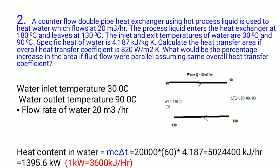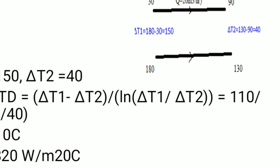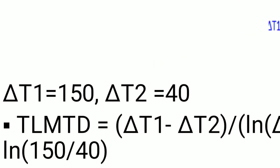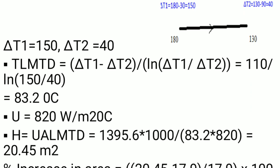The second part asks: if the flow were parallel with the same U, what is the percentage increase in area? Assuming parallel flow, both fluids enter from the same side — water at 30°C and liquid at 180°C. Delta T1 = 180 − 30 = 150°C and delta T2 = 130 − 90 = 40°C. LMTD = 83.2°C.